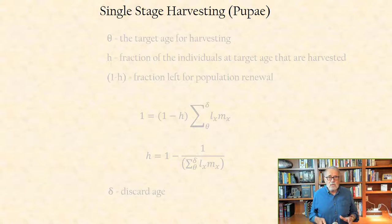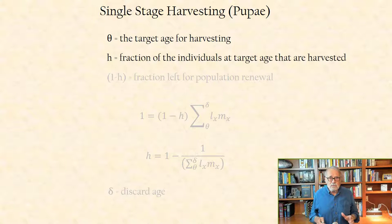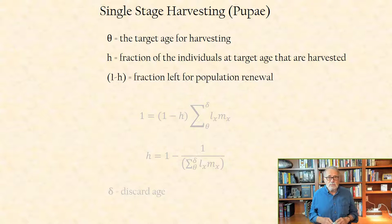Let theta denote the target age for harvesting, and H denote the fraction of the individuals at the target age that are harvested. This leaves the fraction 1-H for renewal.